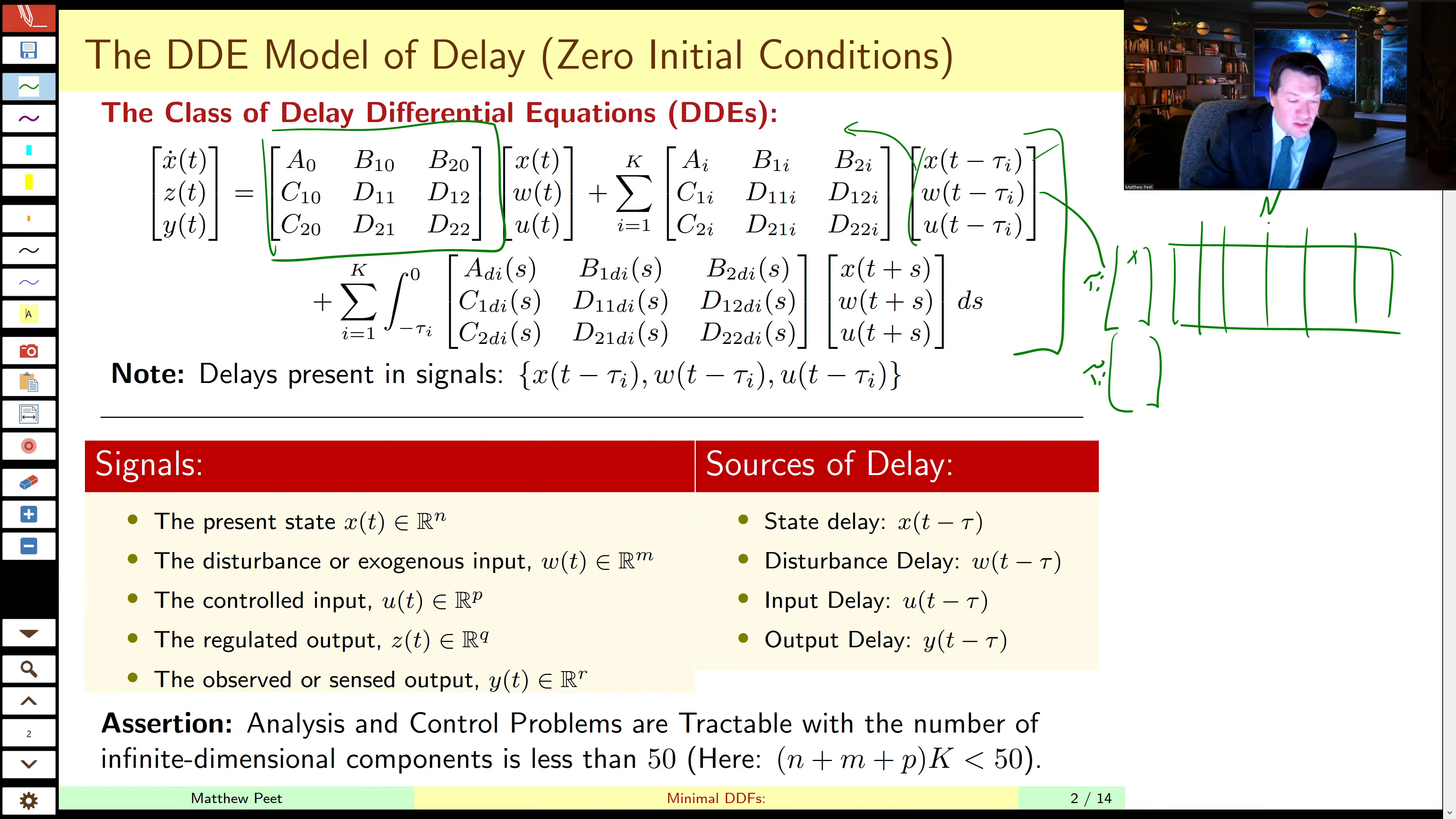Now the total number of ODEs we get out of this is the number of vectors in this vector, so n plus m plus p, times the number of delays, because each of these things can affect each of the delayed components, times the number of discretization points. So if you just had 100 states and 100 delays, you'd instantly get to a 10,000 dimensional vector, which then you have to discretize.